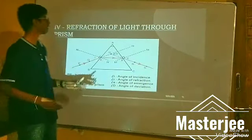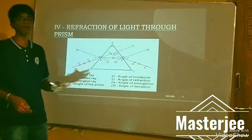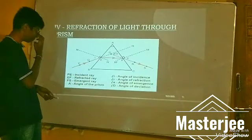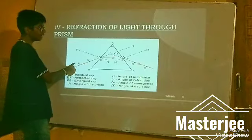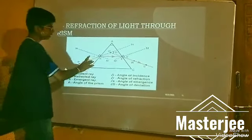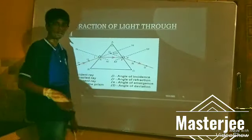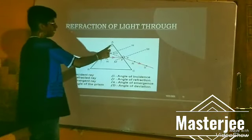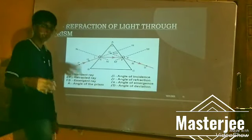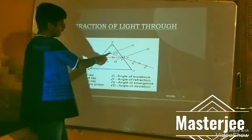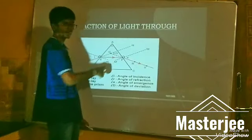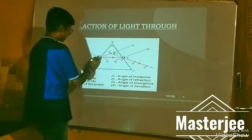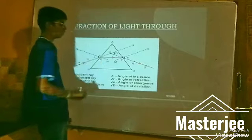Our third topic is refraction of light through a prism. Here, PE is the incident ray, EF is the refracted ray, and FS is the emergent ray. Angle A is the angle of the prism, angle D is the angle of deviation, and angle I is the angle of incidence.